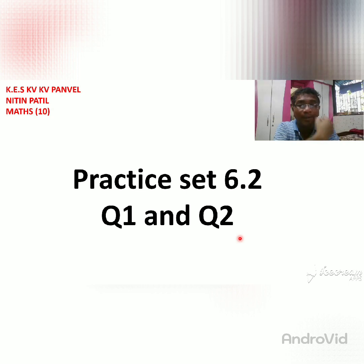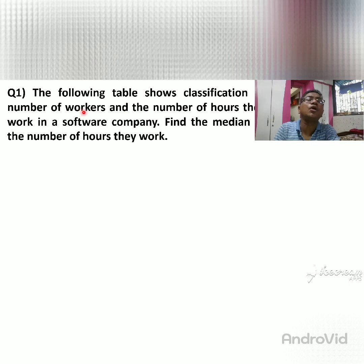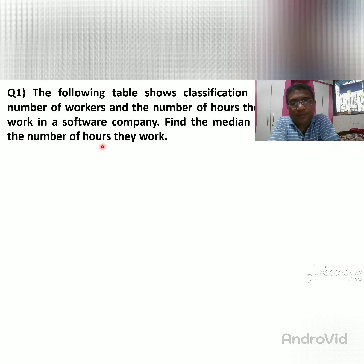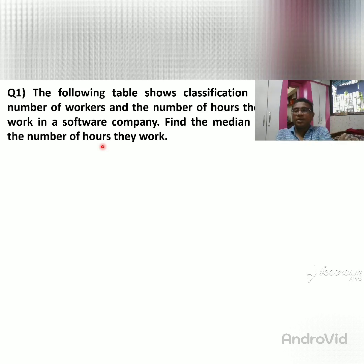In Practice Set 6.2 we are going to learn Question 1 and Question 2 only. Question 1: The following table shows the classification of number of workers and number of hours they work in a software company. Find the median number of hours they work. The workers and their working time period are given in the table.